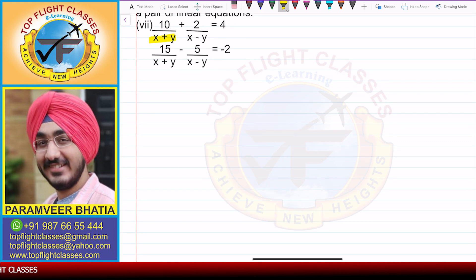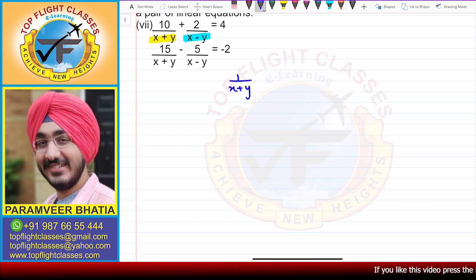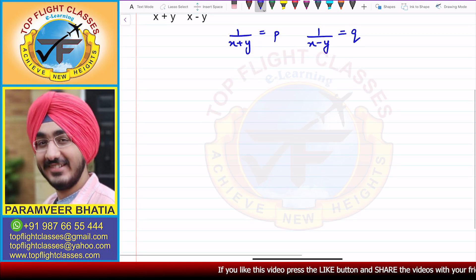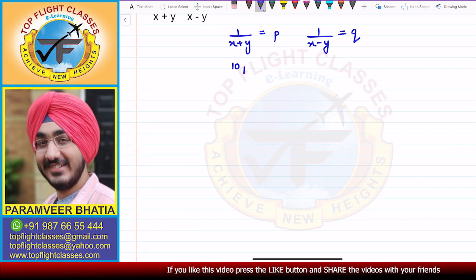So I'll put 1/(x+y) = P and 1/(x-y) = Q. On substituting, I'll get 10P + 2Q = 4.